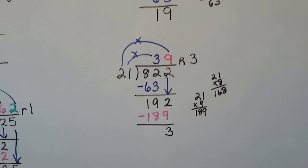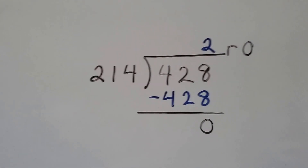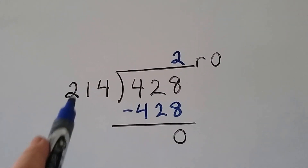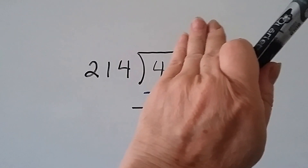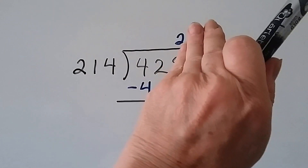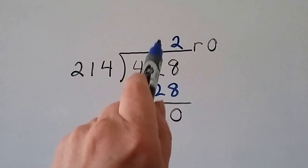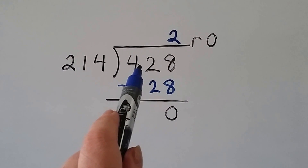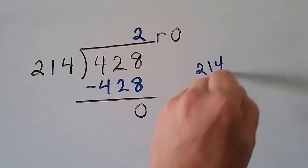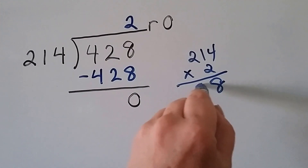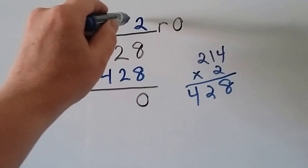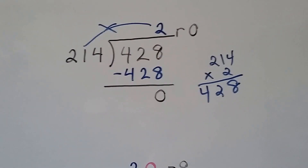Let's go to three digits. Now instead of 21, we have 214, and we're going to fit it into 428. How many times can 214 fit into 4? None. How many times can 214 fit into 42? None. Can 214 fit into 428? Yep, so we put our answer above the 8. We do a little math on the side: 214 times 2 is 428. We multiply, subtract, and get a remainder of 0.